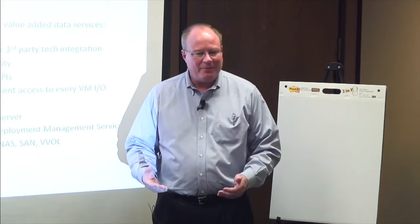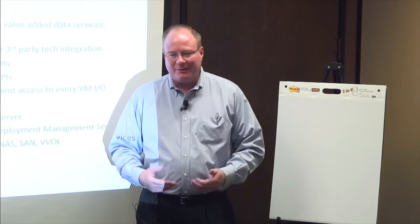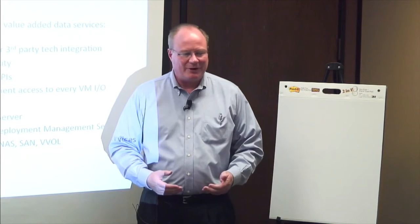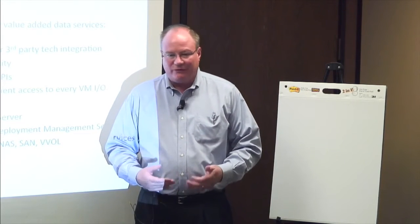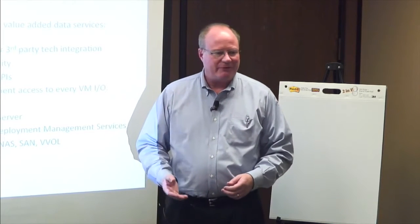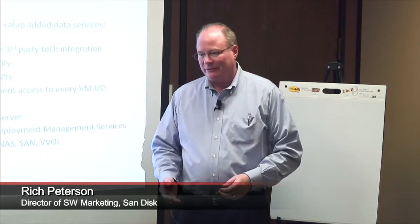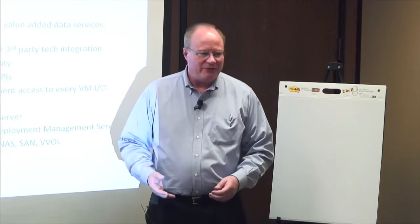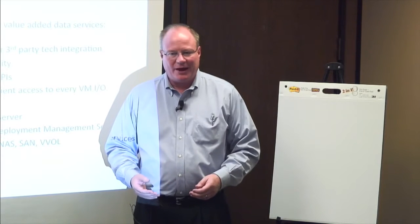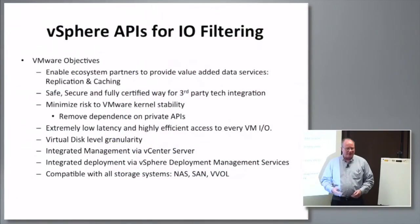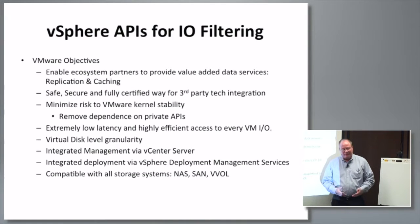FlashSoft has been on the market for a couple of years now, and at this VMworld we were able to announce a very close collaboration with VMware — not for the currently shipping product, but for ESX 6. That program is called the vSphere APIs for IO Filtering. We are working with VMware as a design partner for those APIs so that any third party can use native APIs within vSphere ESX 6 to enable a caching engine to integrate through open APIs and accelerate storage performance. It's a real move forward.